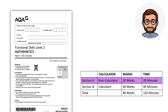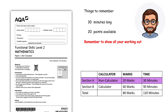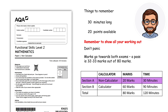Here are some things to remember: the exam is 30 minutes long, there are 20 points available. Remember to show all your working out and don't panic if you don't know the answer to a question — just move on to the next one. The marks go towards both exams; a pass is 32 to 33 marks out of 80. This is why it's important not to panic and just move on to the next question.